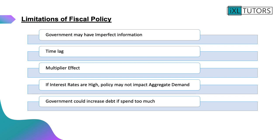Fourthly, if interest rates are high, then fiscal policy might not have an impact on aggregate demand. And finally, the government could increase debt if they spend too much. It's really worth keeping an eye on what's happening to government spending over the next few years, because there have been huge increases in government spending during the current period.